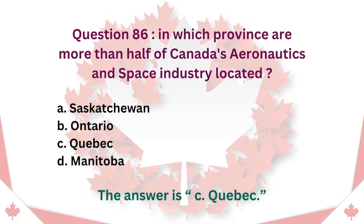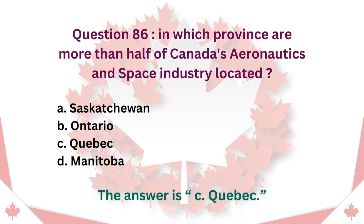Question 86: In which province are more than half of Canada's aeronautics and space industry located? A. Saskatchewan. B. Ontario. C. Quebec. D. Manitoba. The answer is C. Quebec.